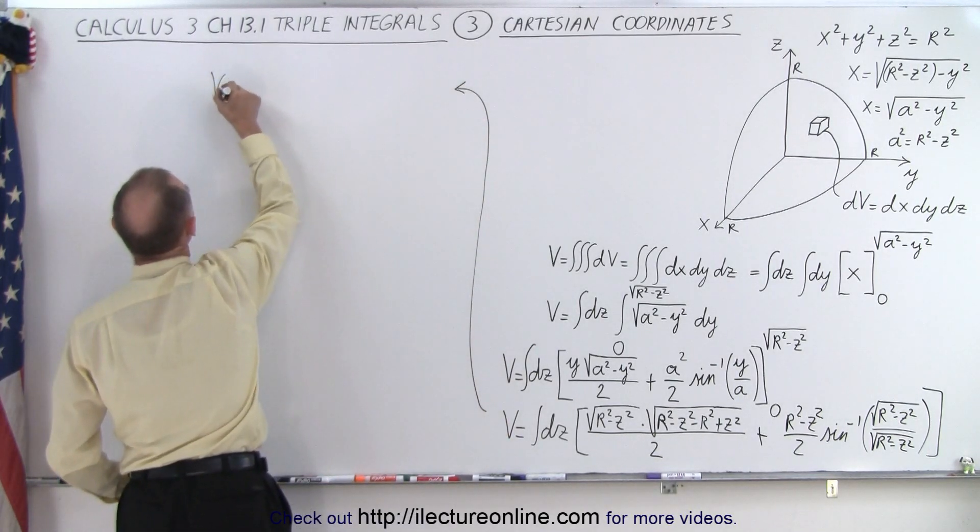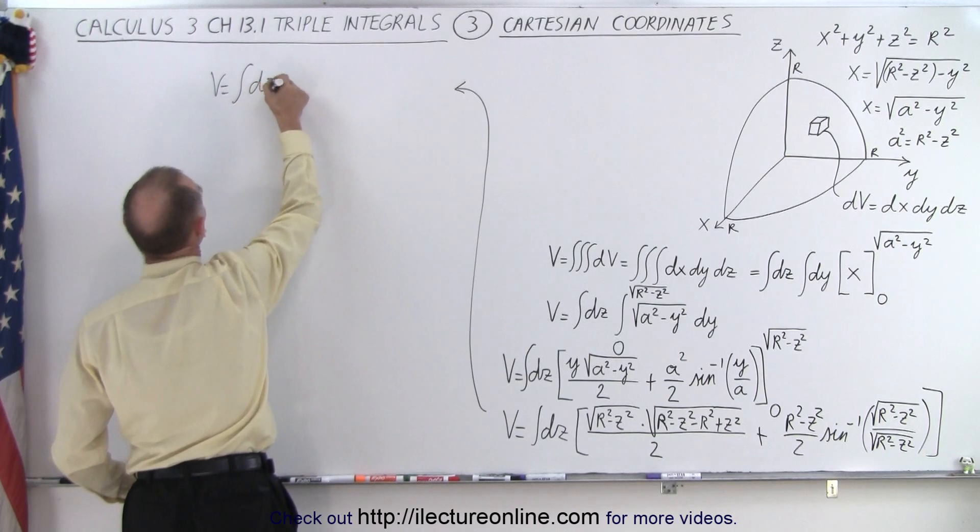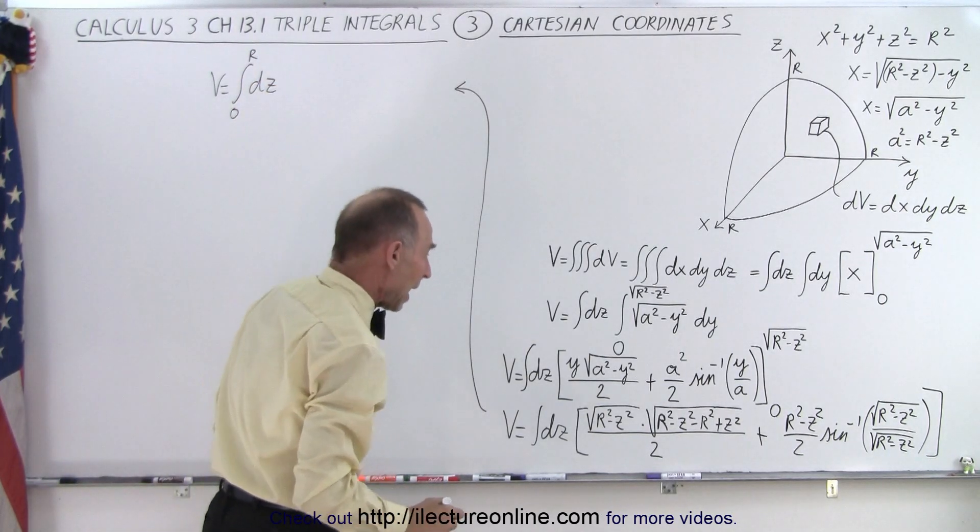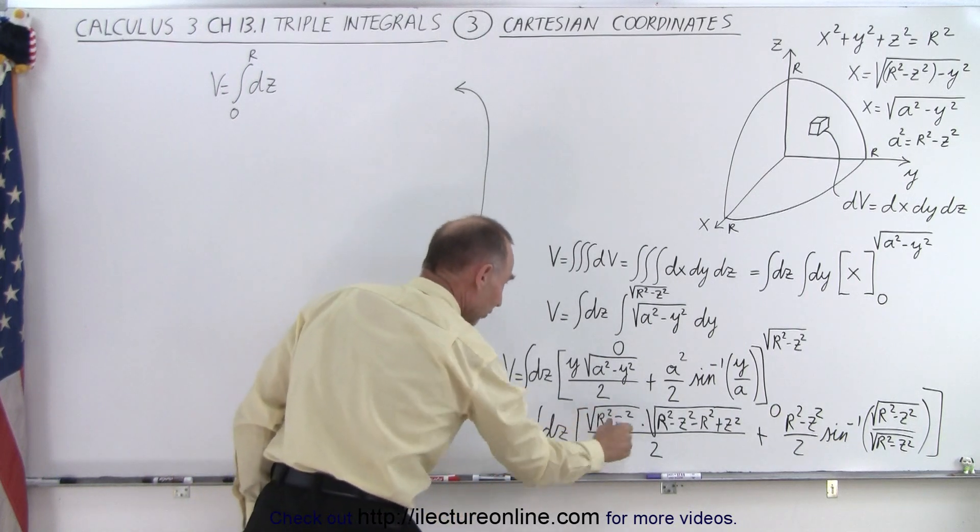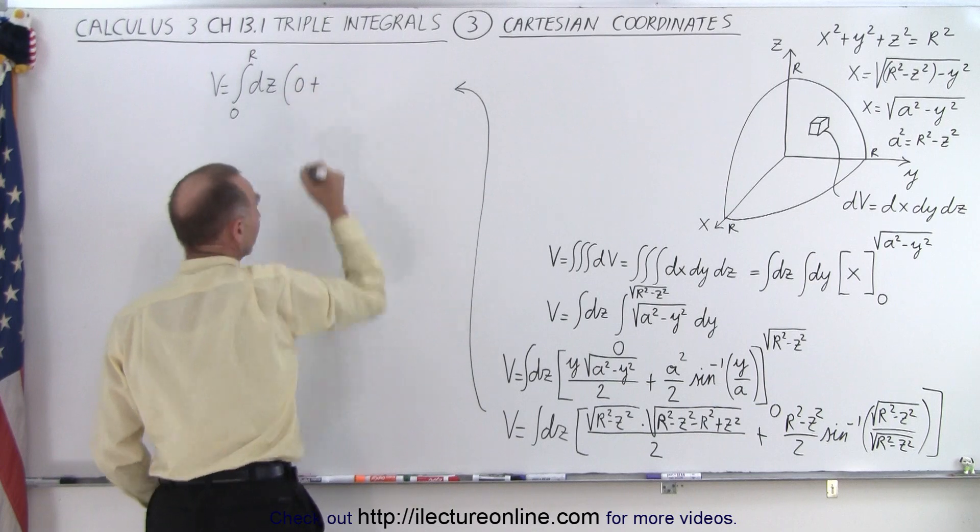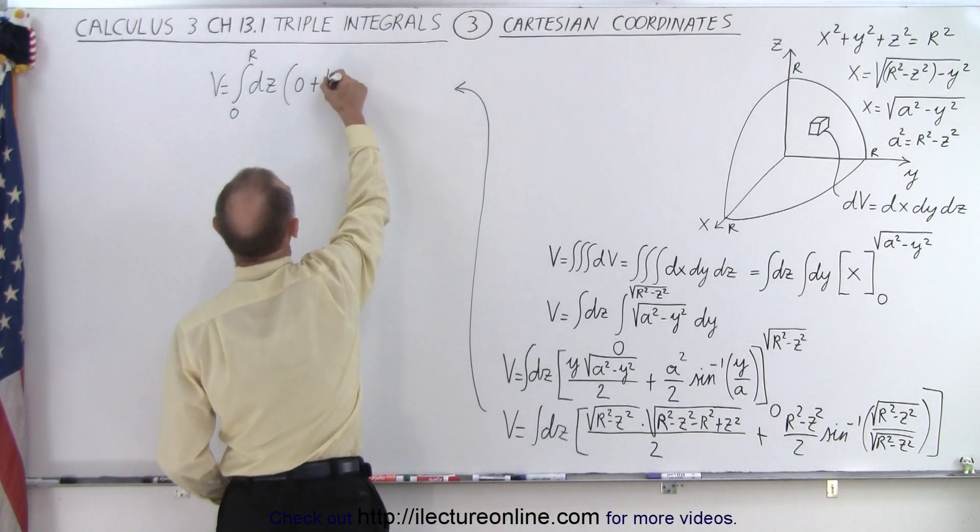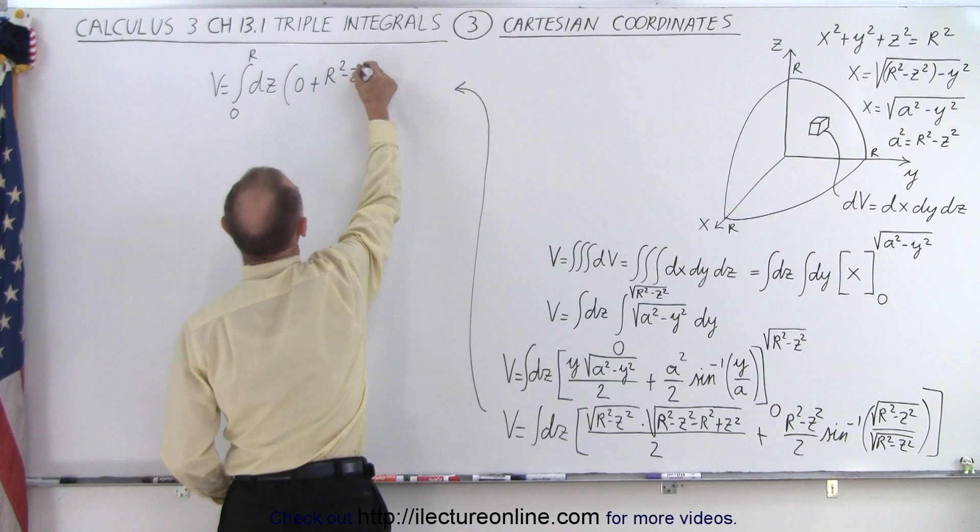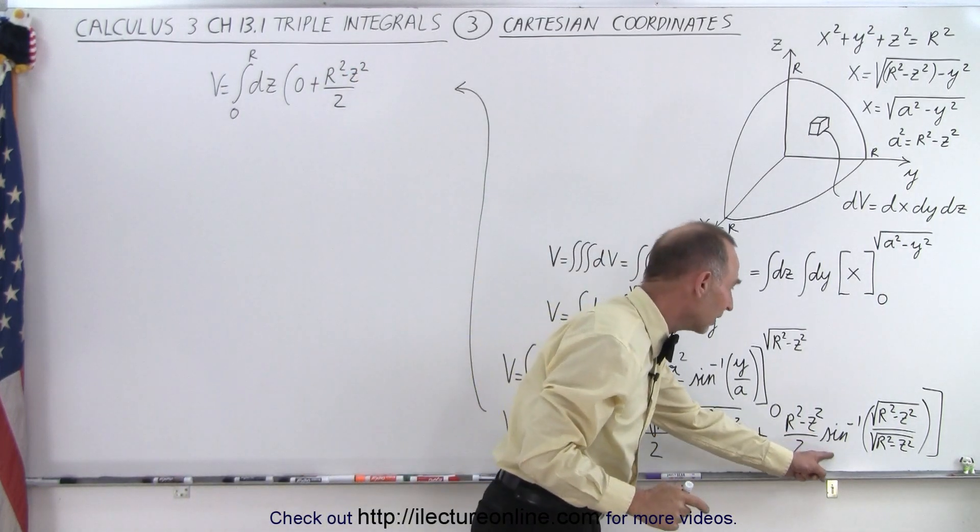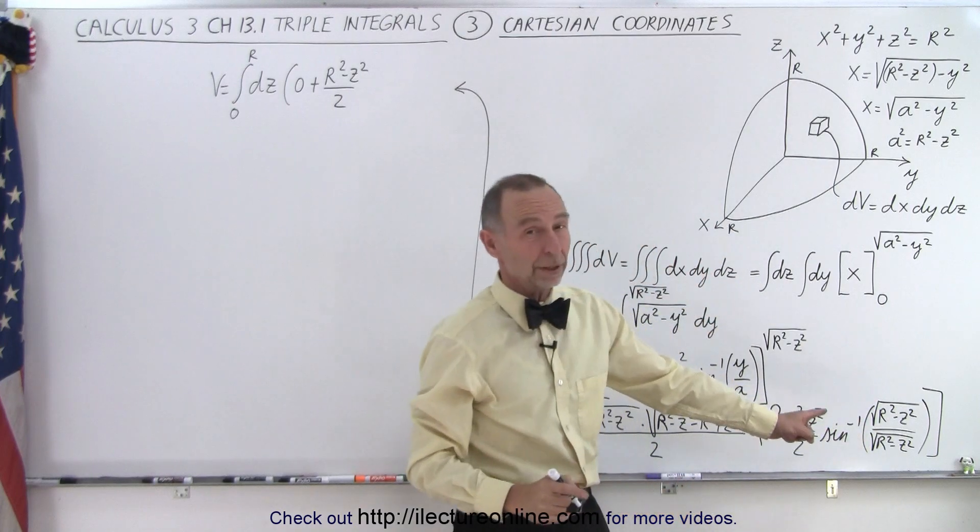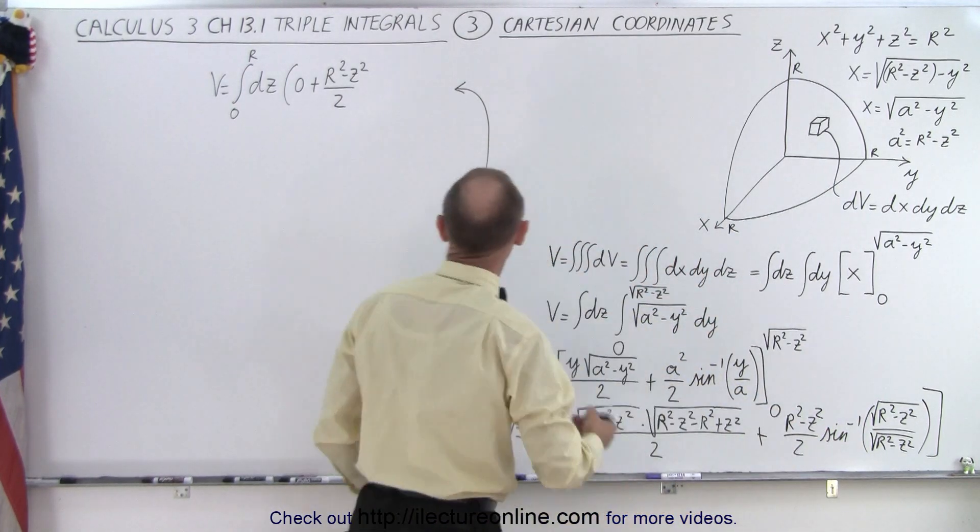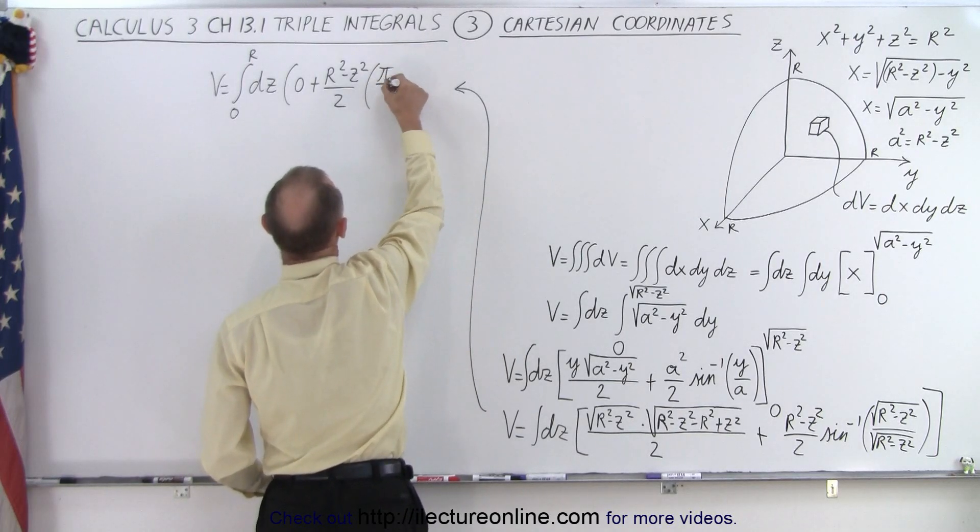So that means that we have v is equal to the integral of dz, and of course the last integral is going to go from 0 to r. And so we have 0 plus we have (r² - z²)/2 times the inverse sine of, well, that's equal to 1. And the inverse sine of 1, that's π/2, that's 90 degrees, so π/2, so we multiply this times π/2.